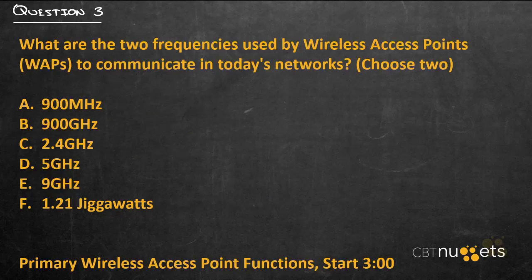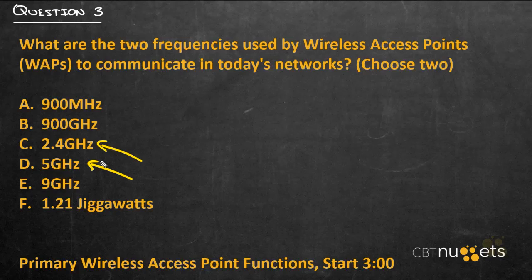Question number three: what are the two frequencies used by wireless access points, WAPs, to communicate in today's networks? Choose two. The answer is C and D — 2.4 and 5 GHz are the prevailing radio frequencies. We didn't get too deep into those in this introductory material; that will come in a later skill. For now, just know that those are the two primary frequencies used to communicate.